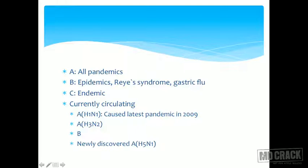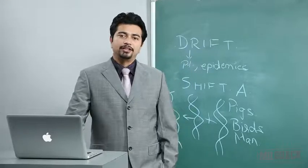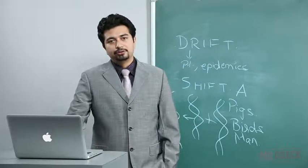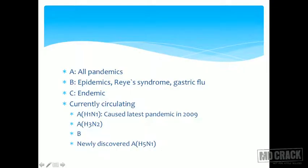Reye's syndrome is acute encephalopathy plus fatty degeneration of the liver. If a patient with influenza takes aspirin, they may develop Reye's syndrome, presenting with coma, convulsions, and encephalopathy, plus a fatty liver. Reye's syndrome is also associated with influenza B.